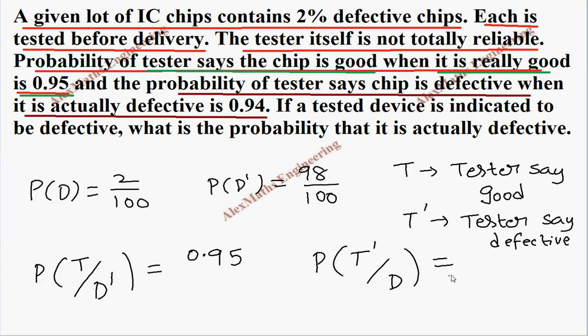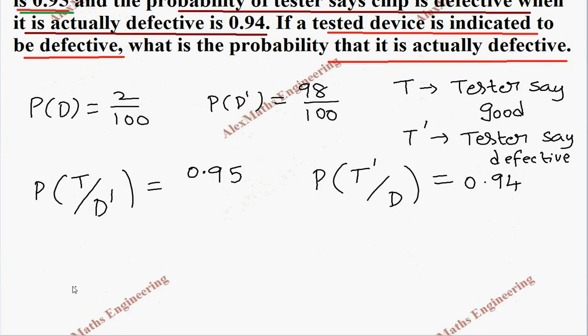Now if a tester device is indicated to be defective, what is the probability that it is actually defective? So when it is tested, if a tester device is indicated to be defective, so the tester says it is defective, so T dash. But what is the probability that actually it is defective? So we want to know what is the probability of D, so what we need is P of D by T dash.